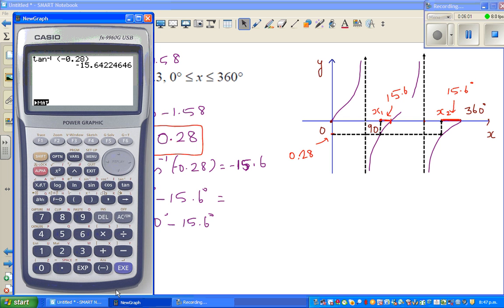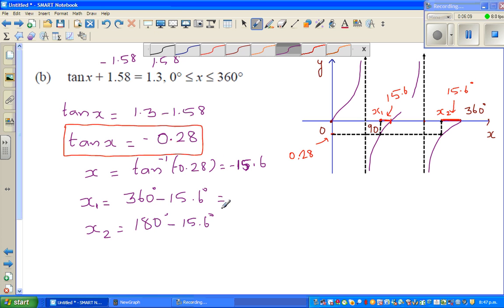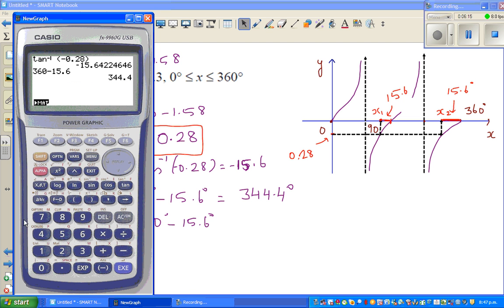So let me use a calculator. This is 360 minus 15.6, which is 344.4 degrees. So one answer is 344.4 degrees. And the other answer is 180 minus 15.6, which is 164.4 degrees.